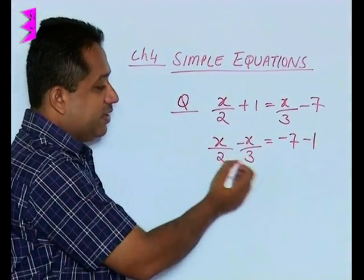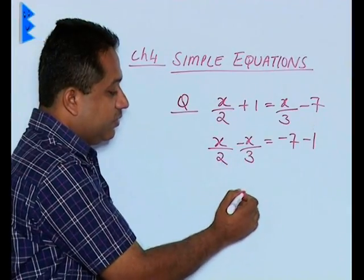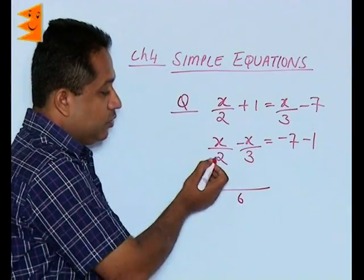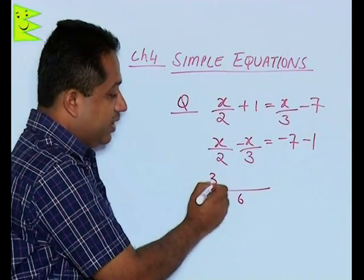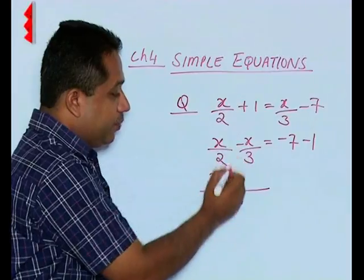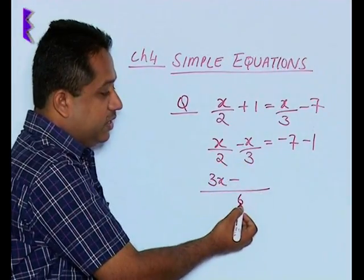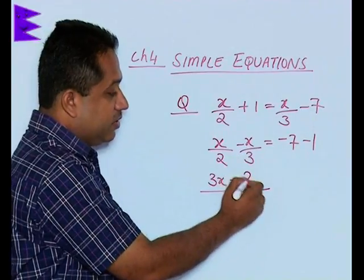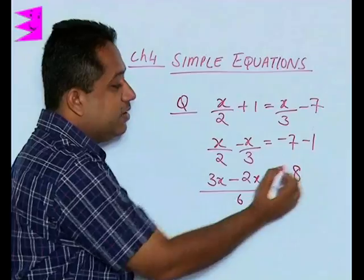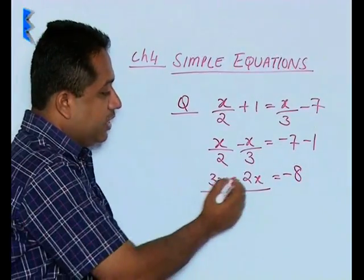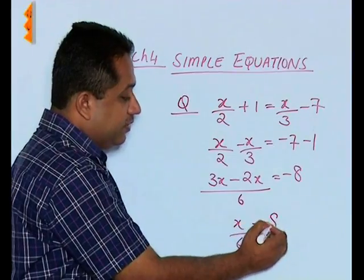Now x/2 - x/3: we take the LCM of 2 and 3, which is 6. 2 goes 3 times in 6, so 3 × x = 3x. Then minus: 3 goes 2 times in 6, so 2 × x = 2x. And -7 and -1 gives us -8.